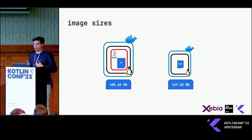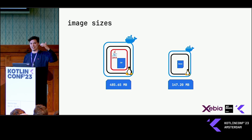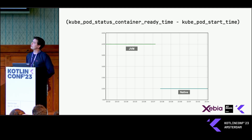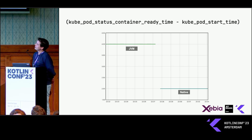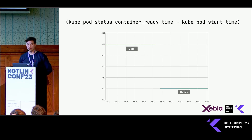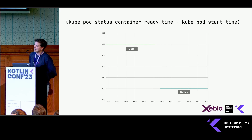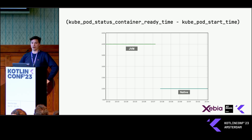Also, looking at startup time, probably for the same reasons — a lot less in there — you see quite a difference. This graph is from the Prometheus expression browser. What you see is that the JVM took four seconds to boot up, while the native one just needed two seconds, so that's half. It seems that there is definitely a speedup here.